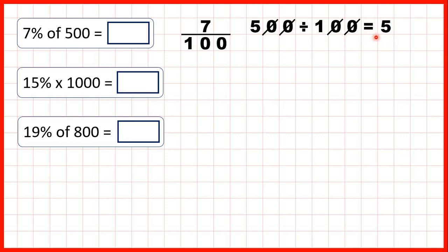So now we need to take that answer and multiply it by the numerator, so we need to work out 5 times 7. 5 times 7 is 35, so 7% of 500 is 35.